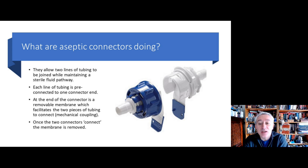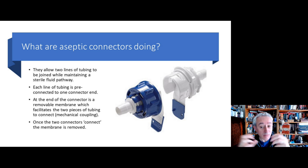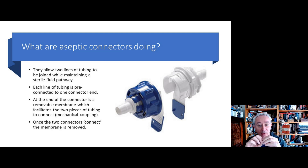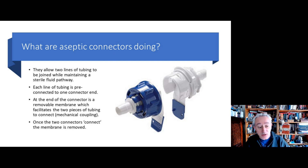So what are aseptic connectors doing? Well, they maintain continuity of the sterile fluid pathway. They consist of two connectors that have been sterilized by gamma irradiation. They come together, they click, and then a removable membrane is pulled out — that permits flow without any ingress of environmental contamination and without any risk from the hands of the operator. So it's a great concept, but we need to make sure that the aseptic connectors we're purchasing are of the right quality.